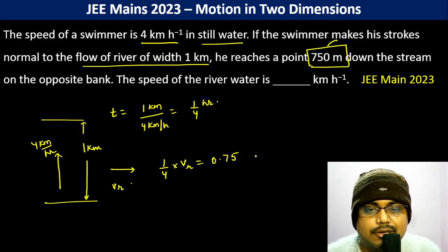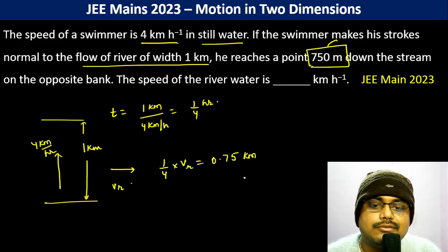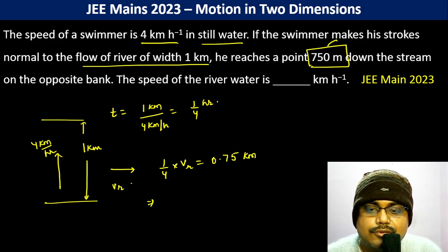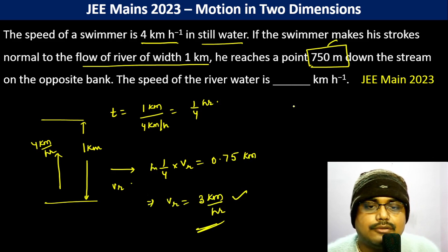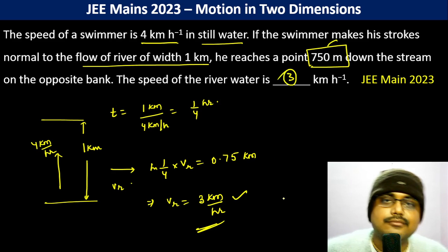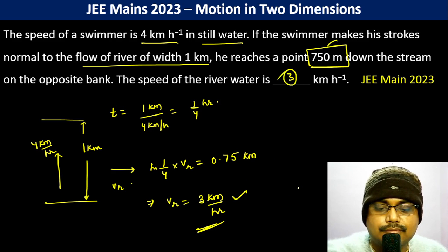So (1/4) × vr gives us vr = 0.75 × 4, which is 3 km/h. So our answer is 3 km/h.